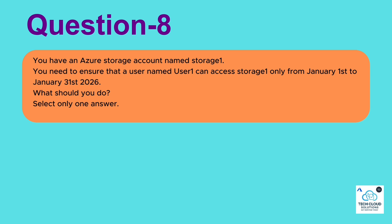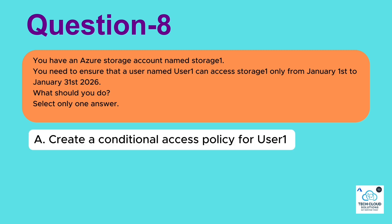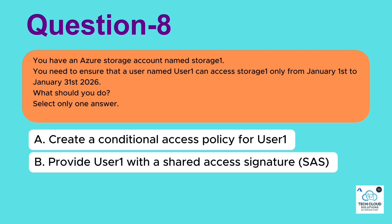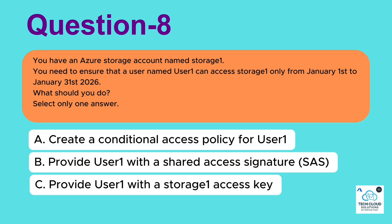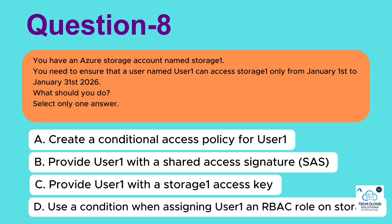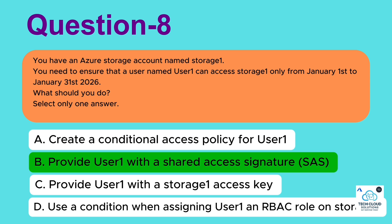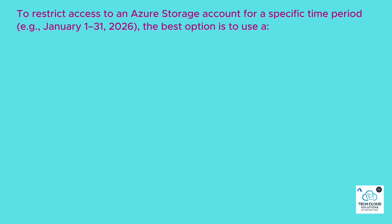Question 8: You have an Azure Storage account named Storage1. You need to ensure that a user named User1 can access Storage1 only from January 1 to January 31, 2026. What should you do? Select only one answer. A. Create a conditional access policy for User1. B. Provide User1 with a shared access signature. C. Provide User1 with a Storage1 access key. D. Use a condition when assigning User1 an RBAC role on Storage1. Correct answer: Provide User1 with a shared access signature. To restrict access to an Azure storage account for a specific time period, e.g. January 1 to 31, 2026, the best option is to use a Shared Access Signature (SAS).